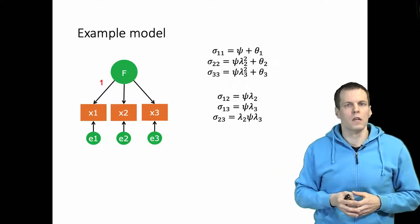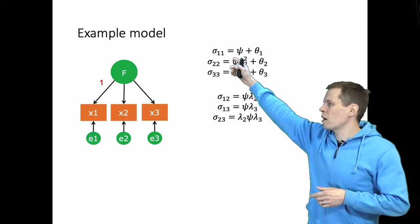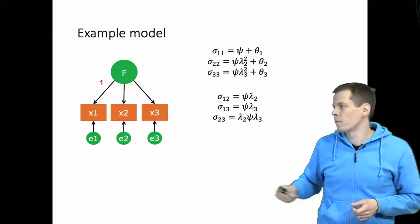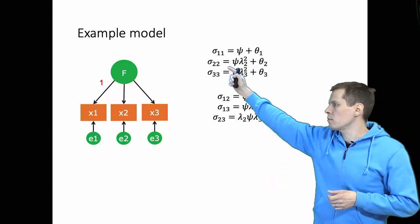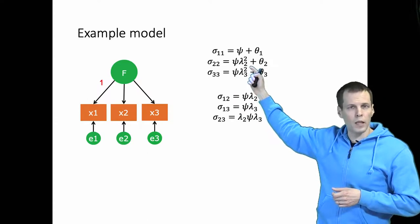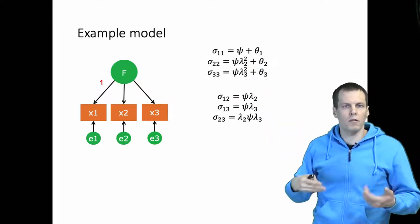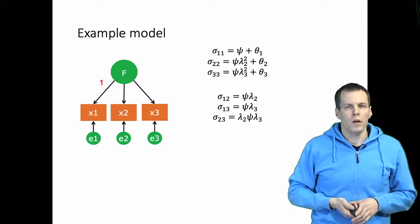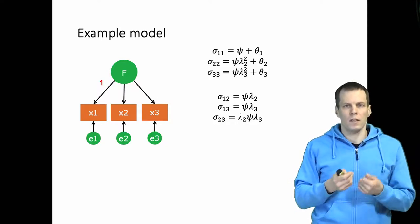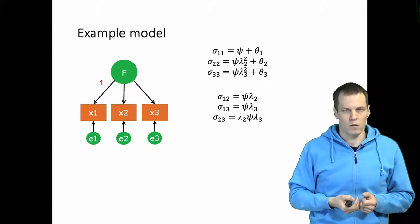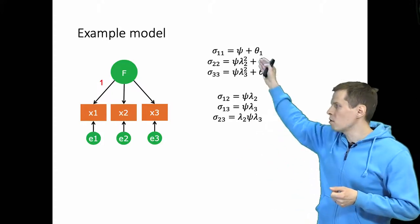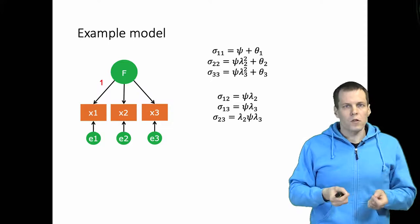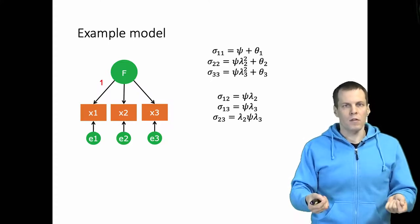These are the model-implied covariances. For example, sigma_11, the variance of x1, equals psi plus theta_1, and sigma_22, the variance of x2, equals psi times lambda_2 squared plus theta_2. We have these six equations, and now we can start working through them to try solving for the parameter values. Assuming the population covariances are known, the question is: can we solve the values of every estimated parameter from these covariances?